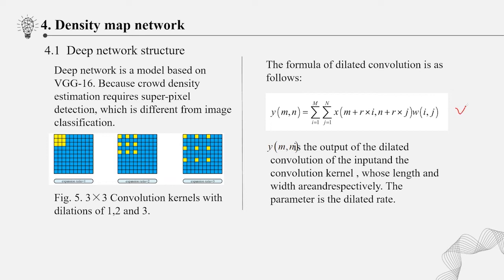Y(M,N), sigma I equals 1 to M. Y(M,N) is the output of the dilated convolution of the input text and the convolution kernel W, whose length and width are M and N respectively. The parameter R is the dilated rate. If R equals 1, the dilated convolution becomes normal convolution.